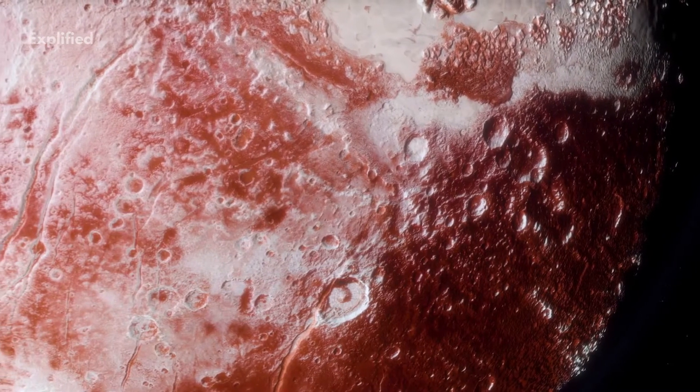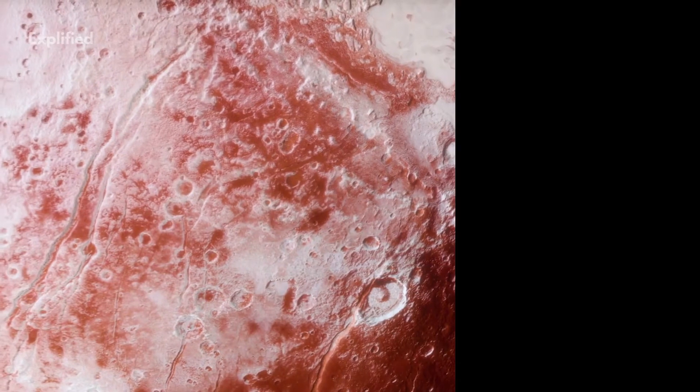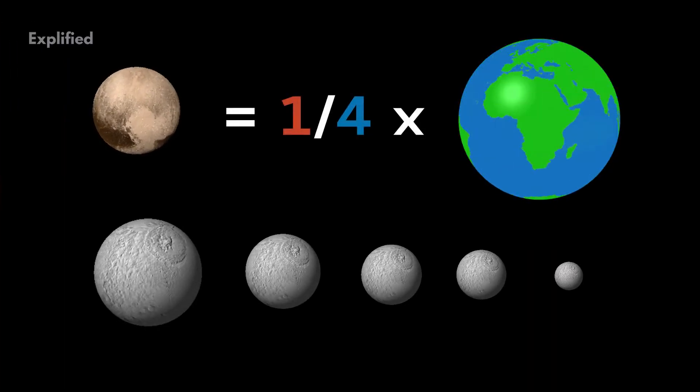Number 2. Surprisingly, Pluto is the largest dwarf planet of all. It is about one-fourth the size of Earth with five moons orbiting it.